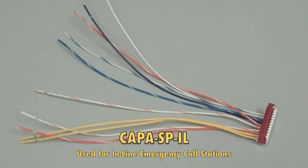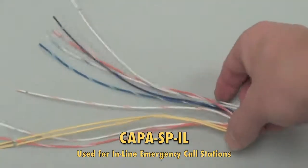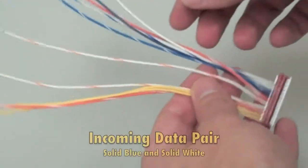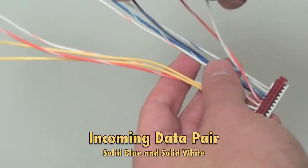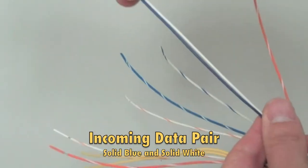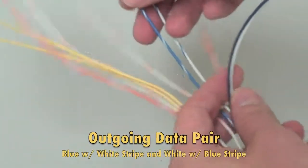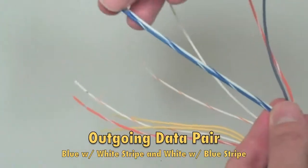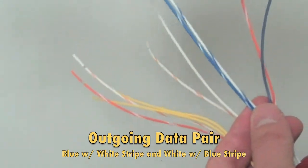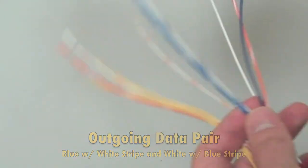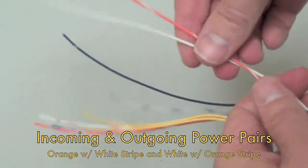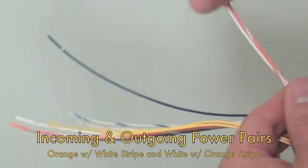This is your inline pigtail adapter, called the Kappa SP-IL for inline. What we have here are your two incoming data pair, blue and white. We have an outgoing data pair, which will be your blue with a white and your white with a blue stripe. You also have your orange with a white stripe and your white with an orange stripe, that is your power.